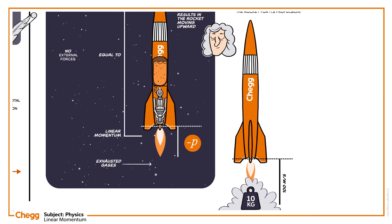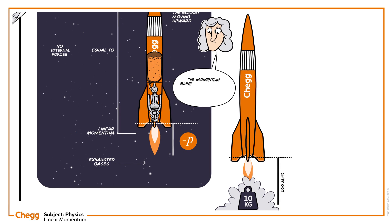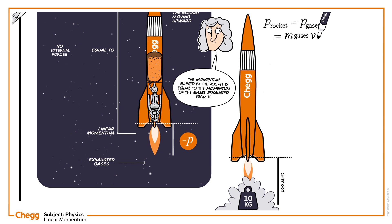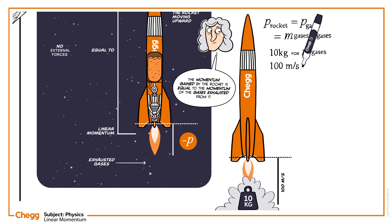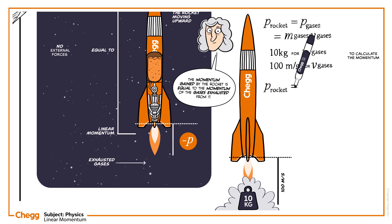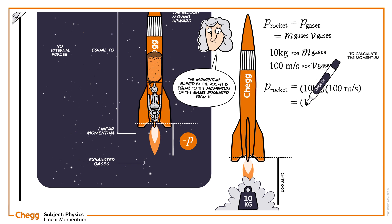From the conservation of linear momentum, the momentum gained by the rocket is equal to the momentum of the gases exhausted from it. The formula is P_rocket equals P_gases. Therefore, M_gases times V_gases. Taking 10 kilograms for M_gases and 100 meters per second for V_gases, P_rocket equals 10 kilograms times 100 meters per second, which equals 1,000 kilogram meters per second.